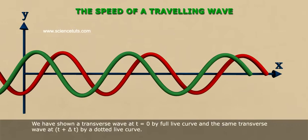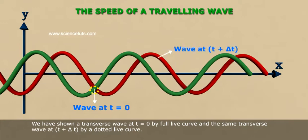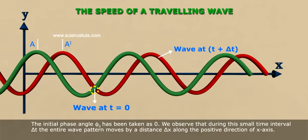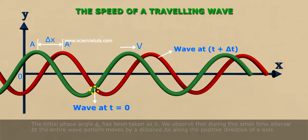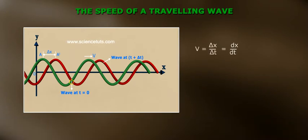We have shown a transverse wave at t = 0 by a full line curve, and the same transverse wave at t + Δt by a dotted line curve. The initial phase angle φ₀ has been taken as 0. We observe that during this small time interval Δt, the entire wave pattern moves by a distance Δx along the positive direction of the x-axis. Therefore, speed of the wave v = Δx/Δt = dx/dt.